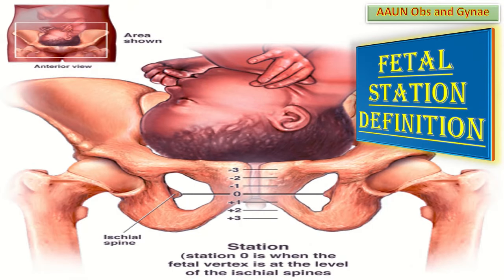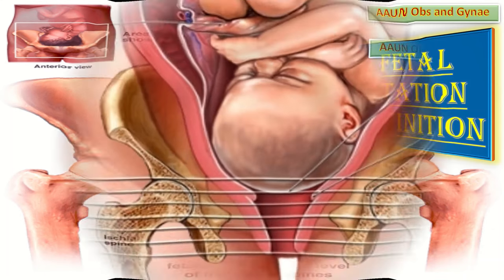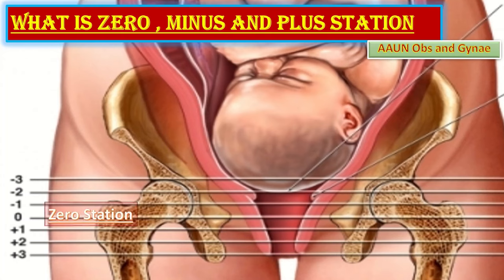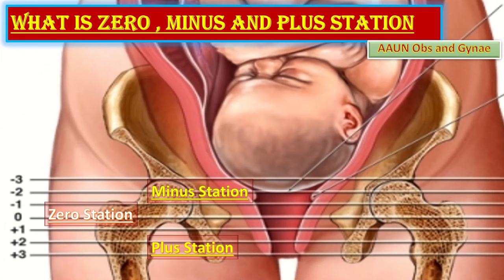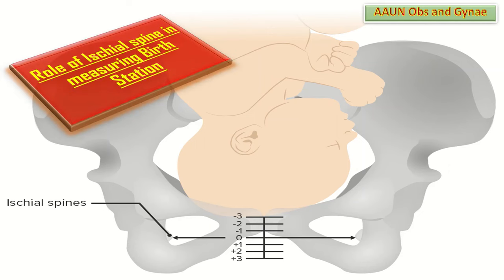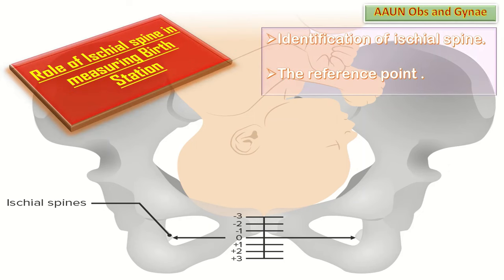Fetal station is defined as the level of the presenting part in the birth canal in relationship to the ischial spines, which are halfway between the pelvic inlet and the pelvic outlet. It describes how far the presenting part or fetal head has descended into the pelvis. Zero station means the head is at the level of the ischial spine. If the head is above the ischial spine, it is a minus station; if below, it is a plus station. The ischial spines are bony projections inside the pelvis used as the reference point for identifying fetal station.